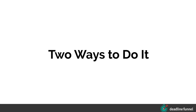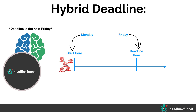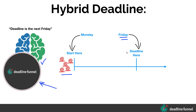Let me show you two ways you can do this. The first way is using our new hybrid deadline feature, where the deadline funnel logic controls everything. As people come into your funnel, you're telling Deadline Funnel that Friday is the deadline. So if they show up on a Monday, Friday is the deadline. If they show up on a Tuesday, Friday is the deadline. If they show up on a Wednesday, Friday is the deadline. Whatever day of the week you choose, that's going to be the deadline.